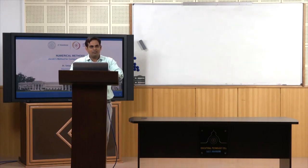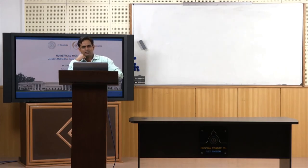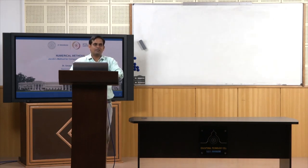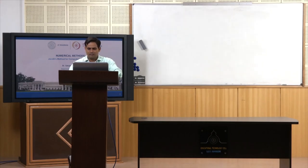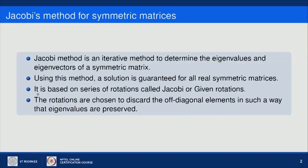Here, what we will do is apply some sort of similarity transformations on the given matrix such that after a sequence of similarity transformations the matrix converts into a diagonal matrix. From the diagonal matrix we can see the eigenvalues directly as the diagonal elements. Furthermore, the sequence will also contain information about the eigenvectors. This method is called the Jacobi method and it gives a guarantee for finding the eigenvalues and eigenvectors of real symmetric matrices.